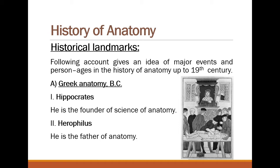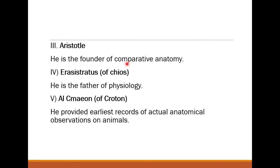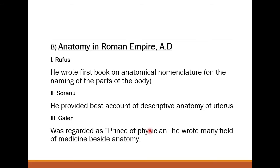Starting with Greek Anatomy (BC era): Hippocrates is the founder of the science of anatomy. Herophilus is the father of anatomy. Aristotle (Aristu) is the founder of comparative anatomy — he worked on comparing human and animal anatomy. Erasistratus of Chios is the father of physiology, an expert in functional anatomy. Alcmaeon of Croton provided the earliest records of actual anatomical observations on animals.